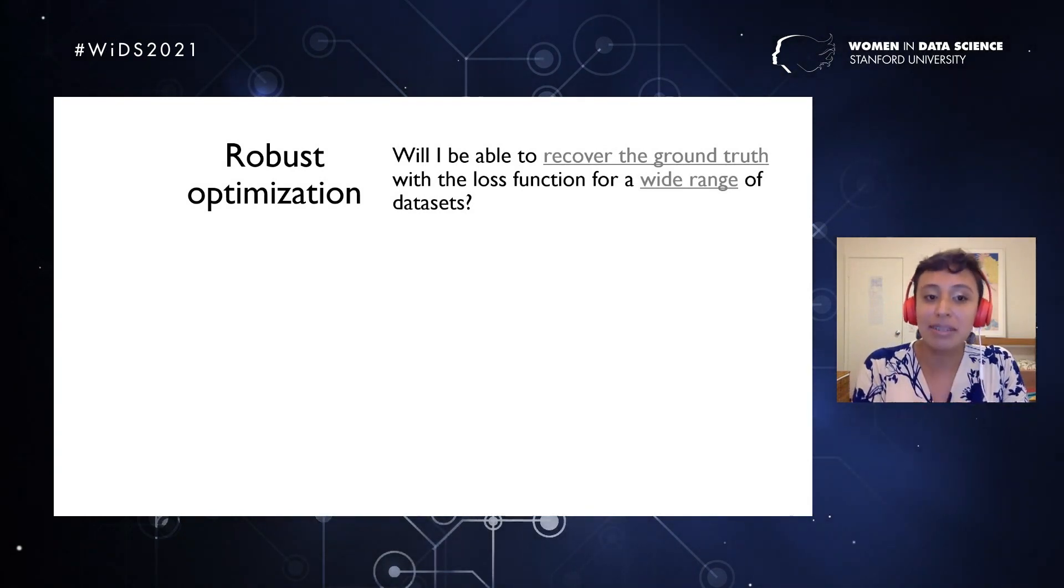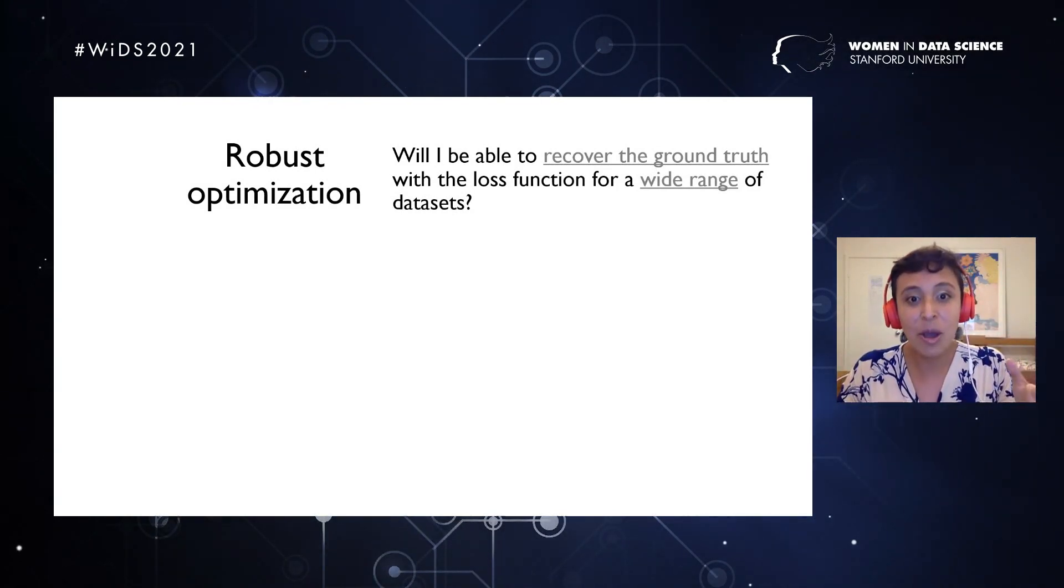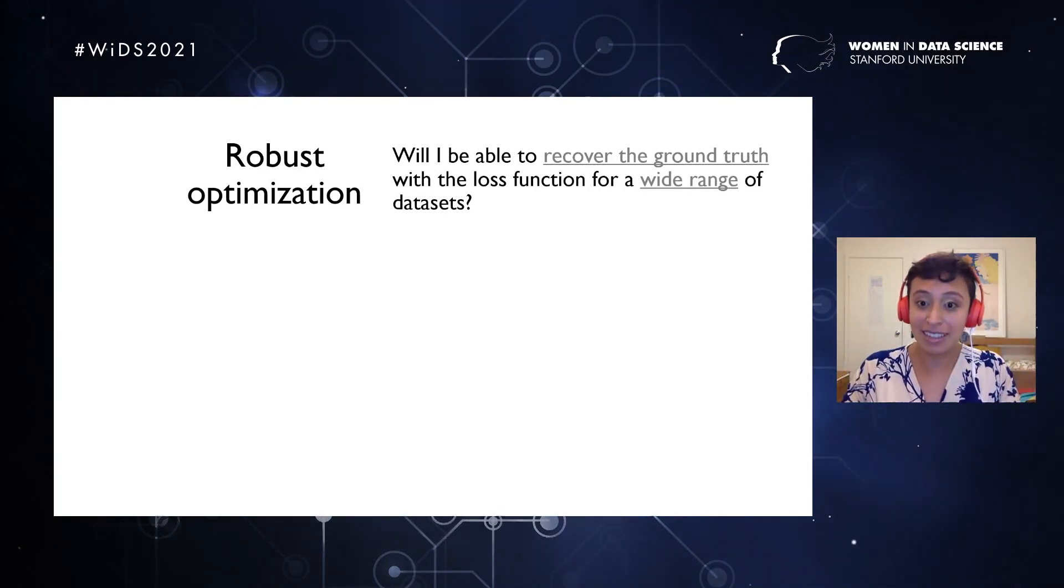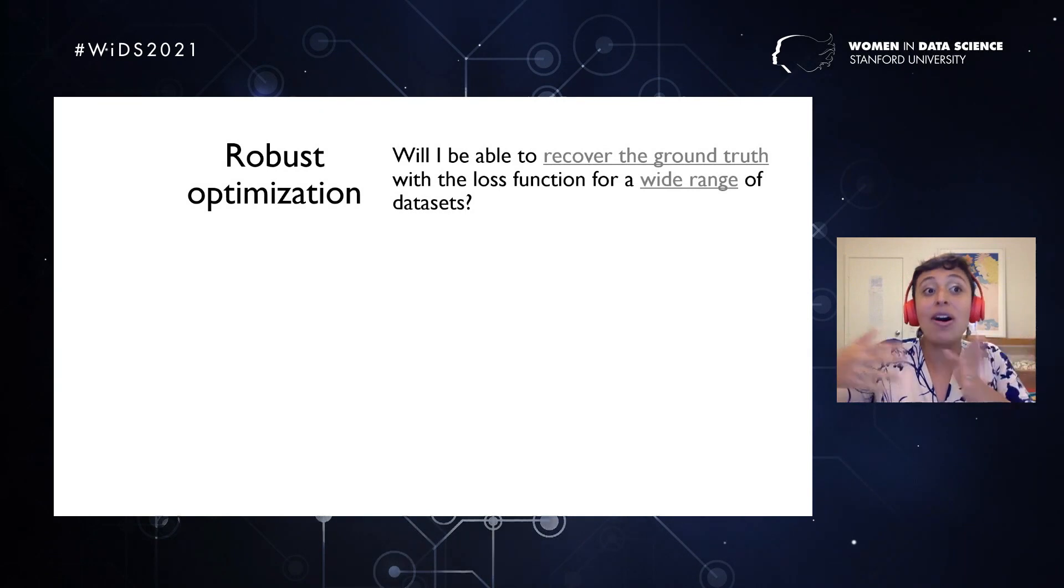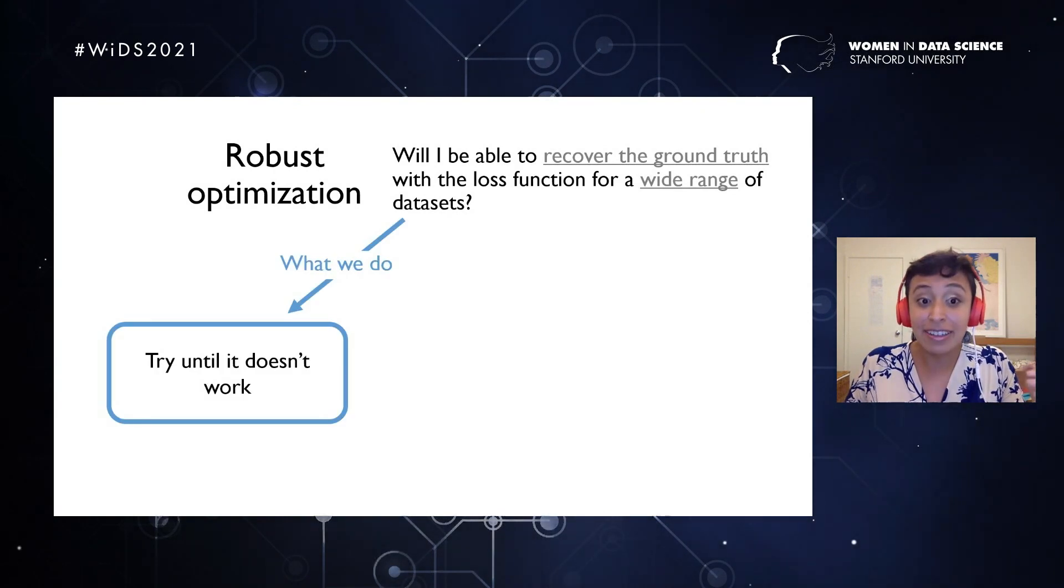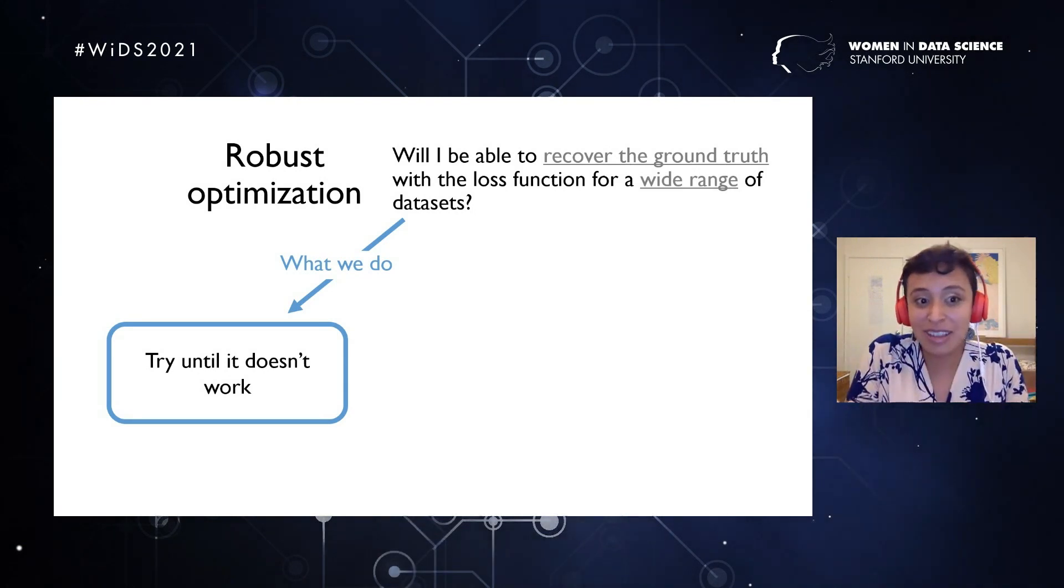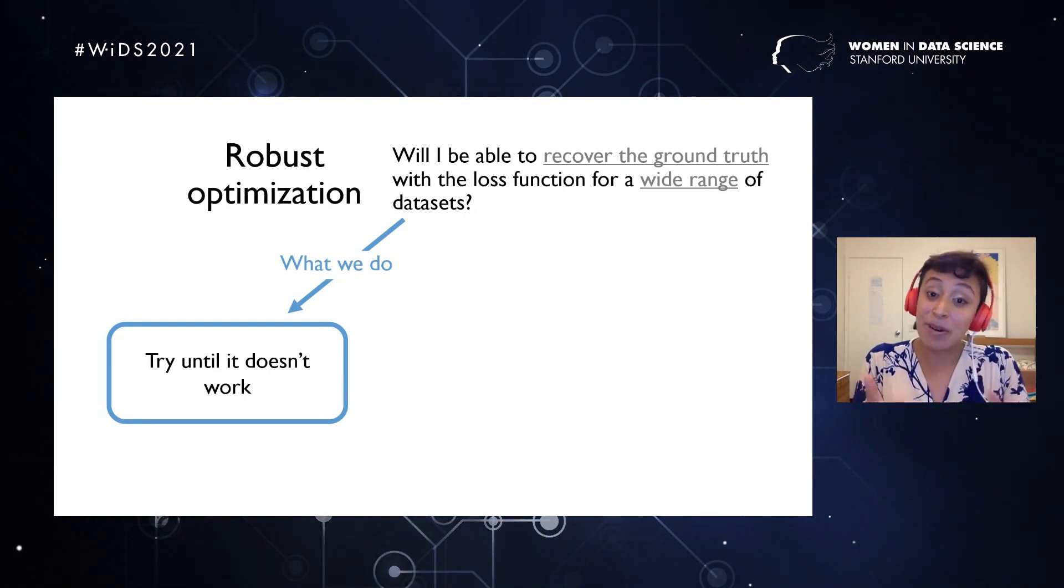When we talk about robust optimization or robust algorithms, when we define those equations, when we define those loss functions, we want to make sure that those loss functions work for a wide range of data sets. So if I'm copying something that someone else did, there is a high chance that it will work also for my problem because it works for a wide range of data sets. And therefore, how do we do that in practice? In practice, we just take a loss function and we try if it works for our data set, and we try with different data sets until we discover that it doesn't work.